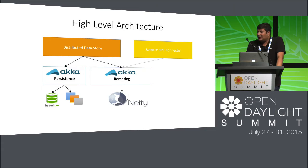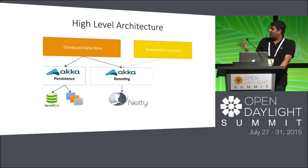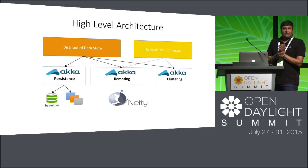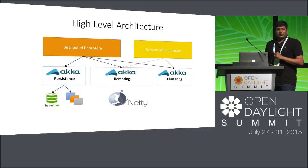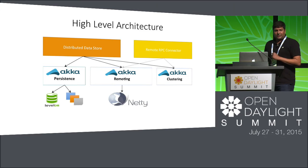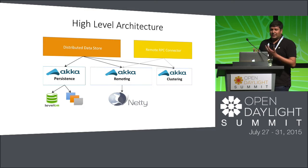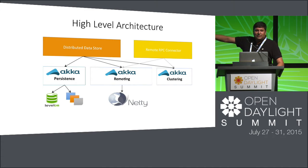ACCA remoting lets one actor system on one node communicate with an actor system on another node. We also use ACCA clustering for discovery of nodes — to find out where another node is, its IP address, and things like that. ACCA clustering also tells us whether a member is alive or dead, reachable or not reachable. These are the common base that all these modules are built on.